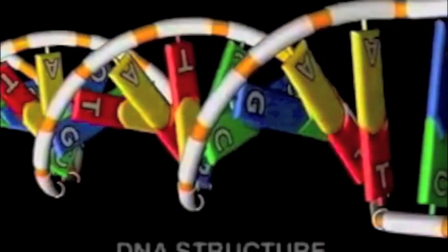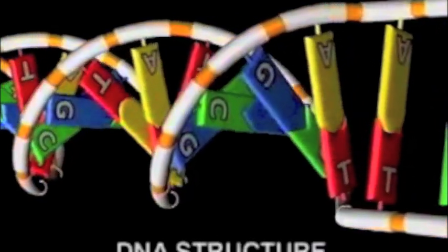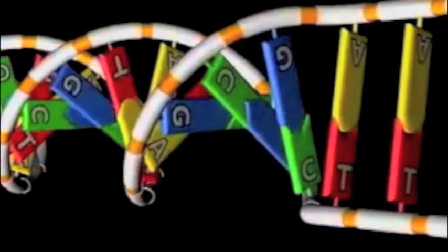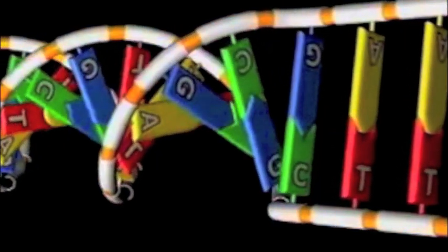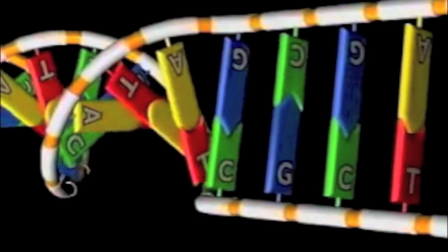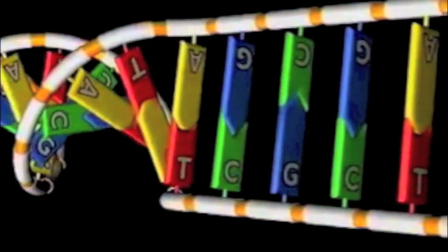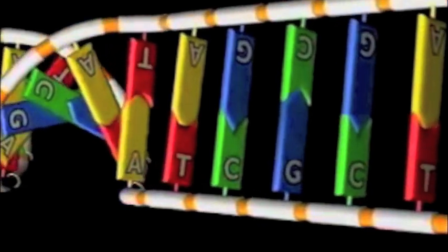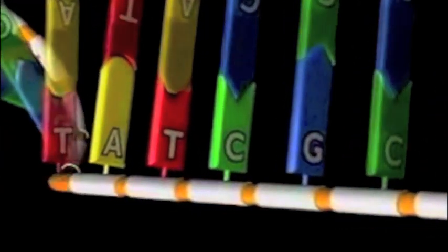A molecule of DNA is shaped like a twisted ladder. The sides of the ladder are made of a sugar called deoxyribose and phosphate groups. These are linked together alternately: sugar, phosphate, sugar, phosphate, sugar, and phosphate.